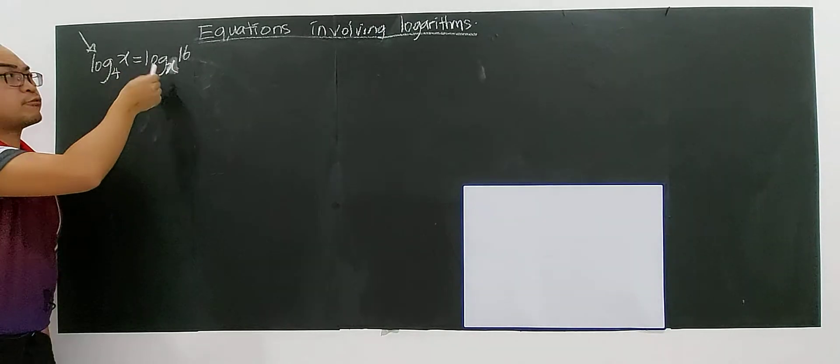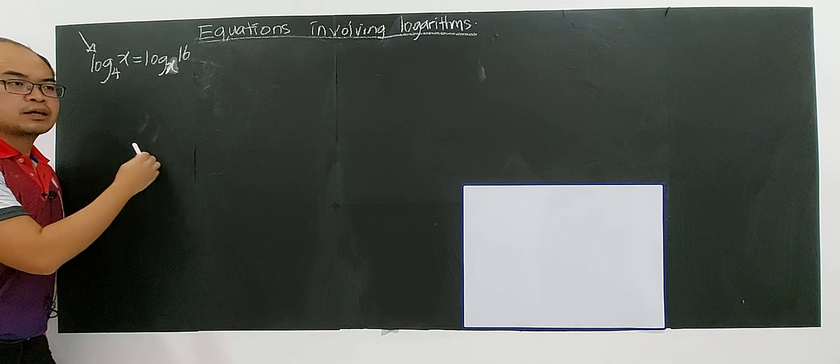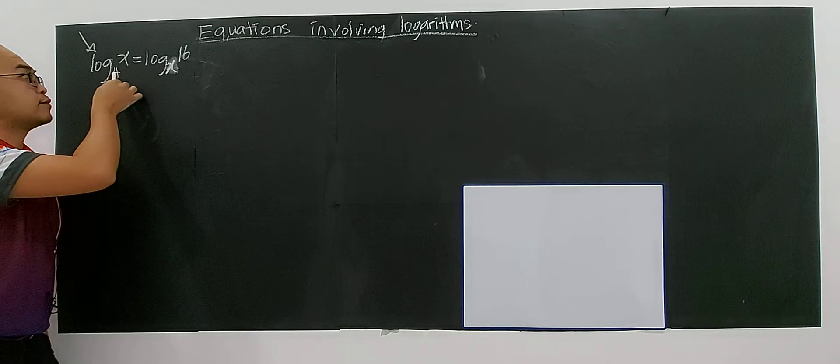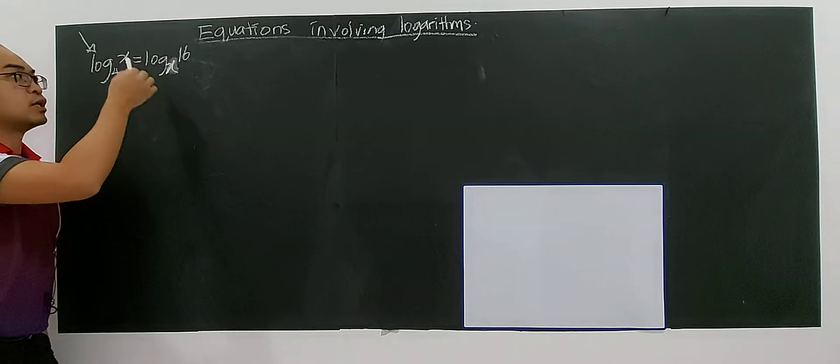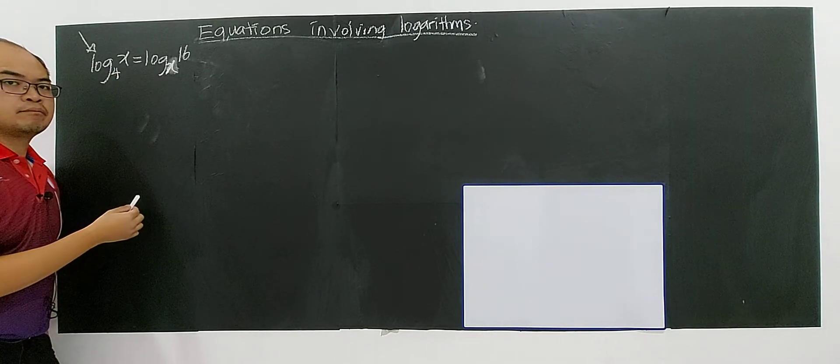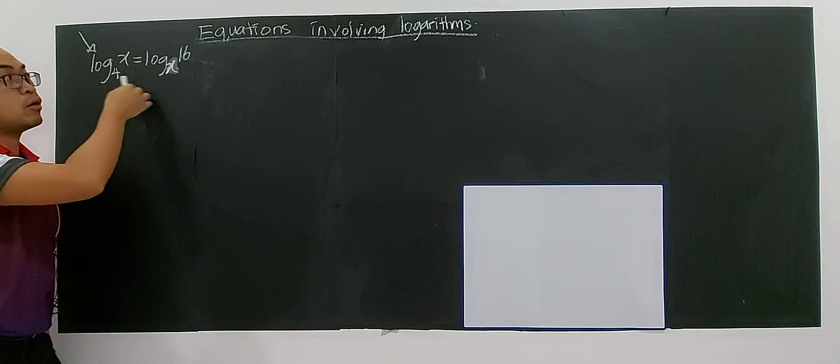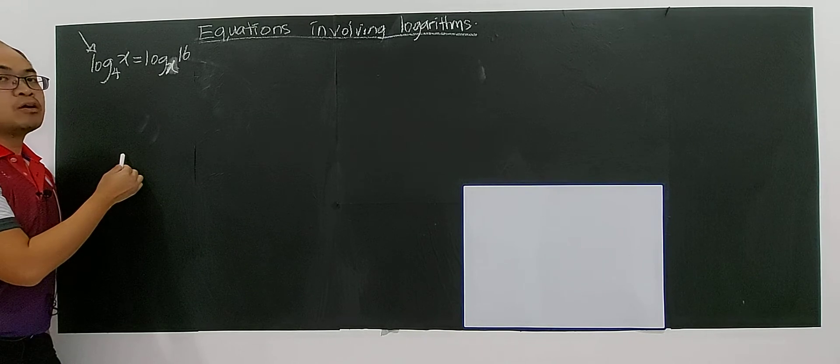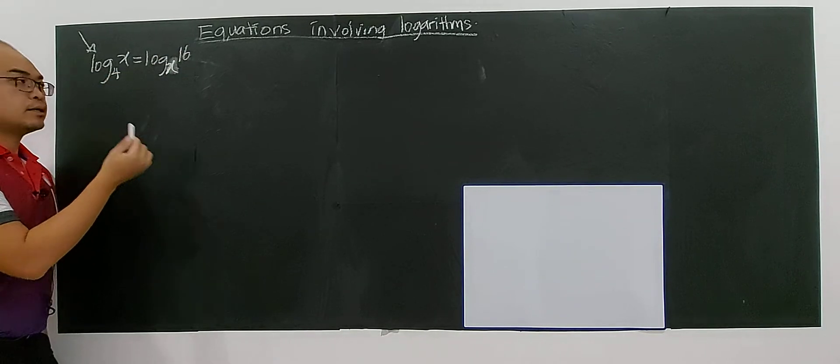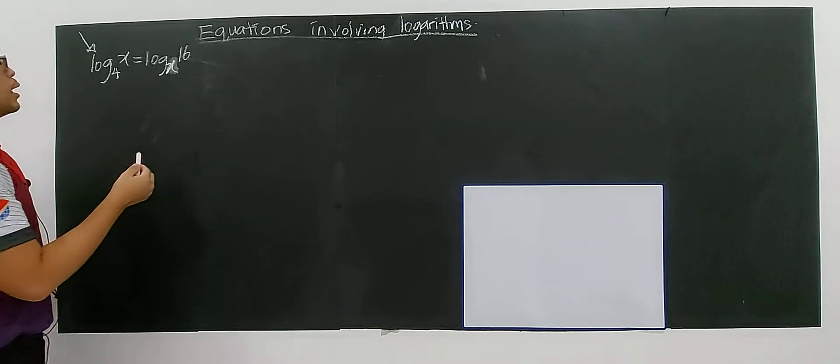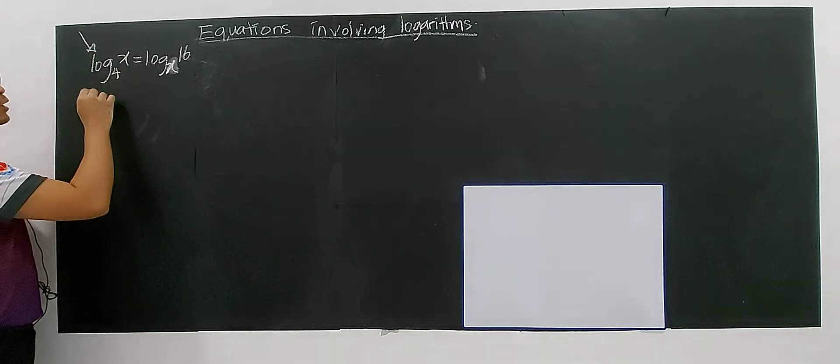So it's better for us to have the same base before we solve the equation. The clue for solving this type of equation where the base are different is we must change the base such that all the base of the log have the same base. Or under base X, or maybe all under base 4.